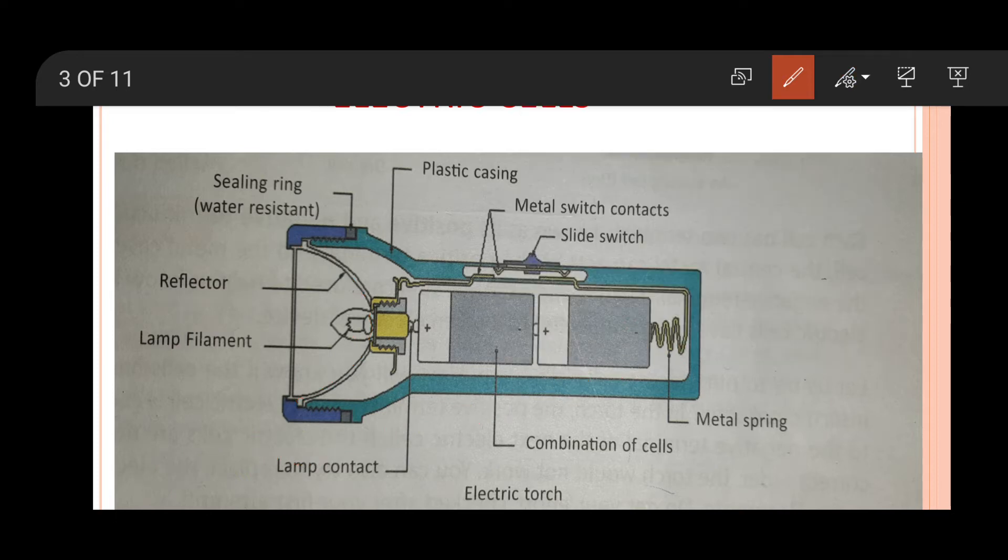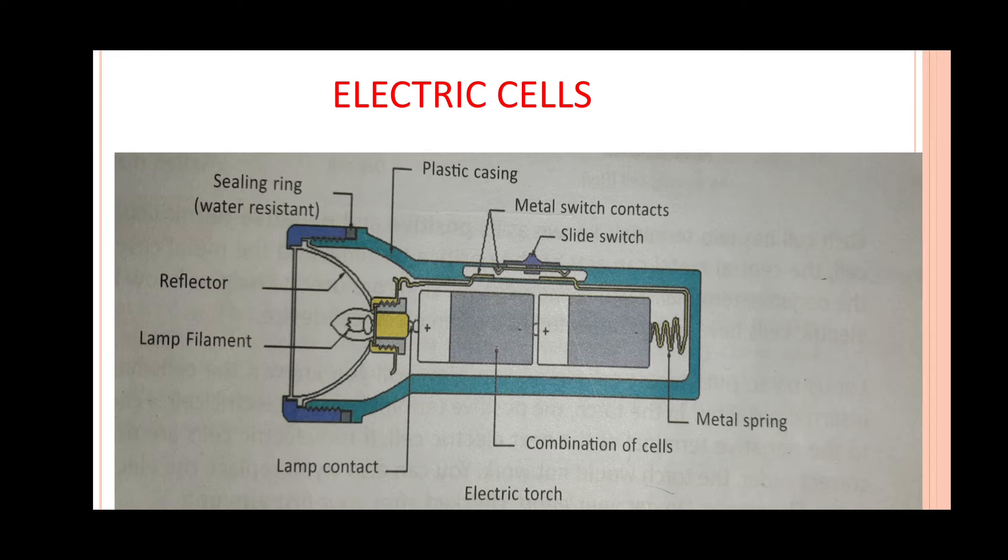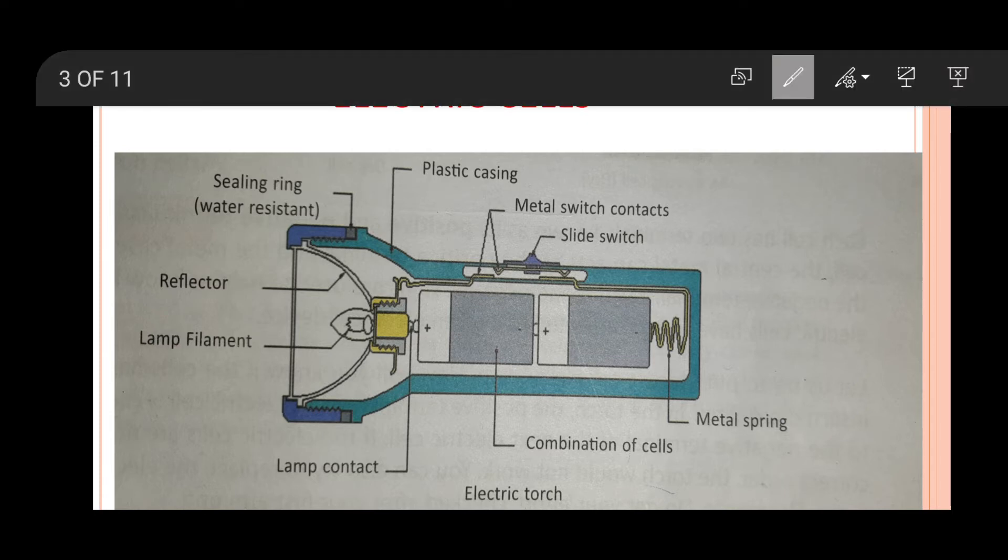Students, not only this torch, other devices also use these cells. Electric cells are used in many other devices like your mobile phones, portable radios, or music systems. These electric cells are devices which produce electricity from metal and chemicals stored inside them. Once the chemicals get used up, the cell may stop working. The most common cells that we use in electric torches and other devices are dry cells.